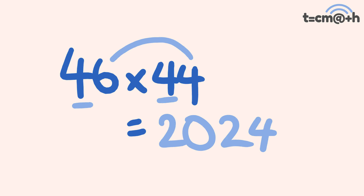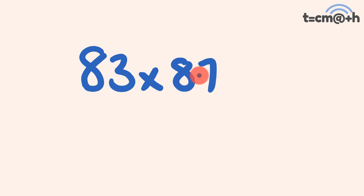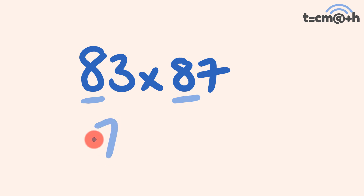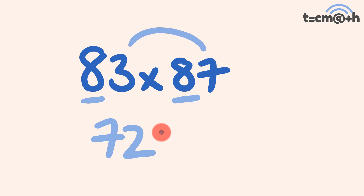Let's try 83 multiplied by 87. The tens digits are both 8, and 3 plus 7 equals 10. First part: 9 times 8 is 72. Last part: 7 times 3 is equal to 21. Our answer: 7,221.